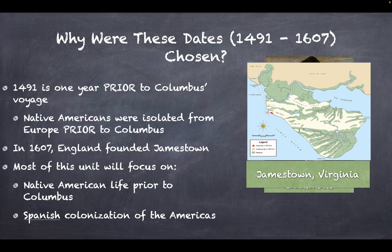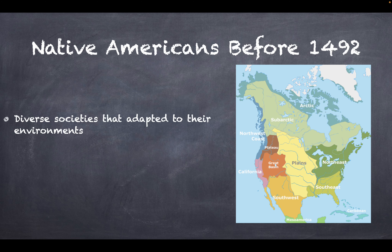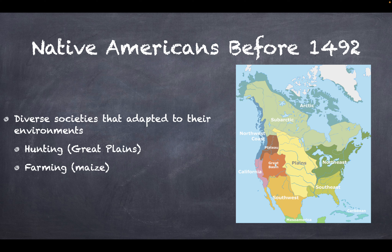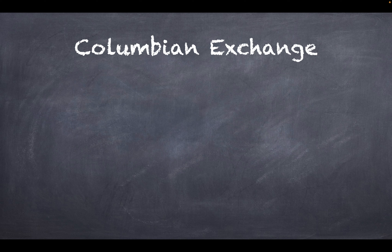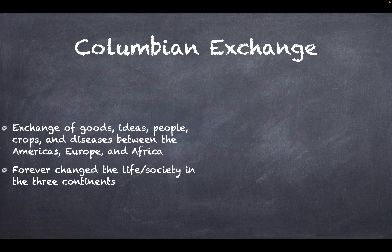Native Americans before 1492 were a group of diverse societies that adapted to their environments — whether it was the Southwest, growing maize or corn; the Great Plains, hunting bison; or the Northeast, combining agriculture and hunting. The Columbian Exchange is a super important topic: it is the exchange of goods, ideas, people, crops, and diseases between the Americas, Europe, and Africa, and it forever changed life and society on all three continents.